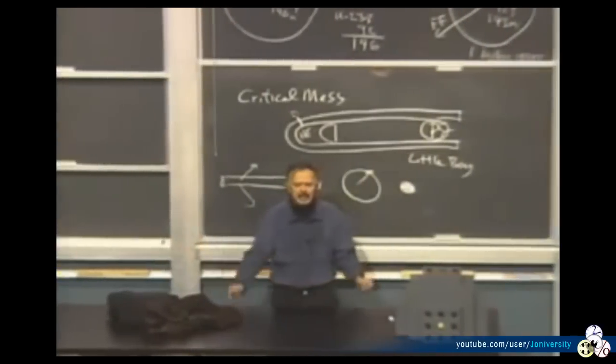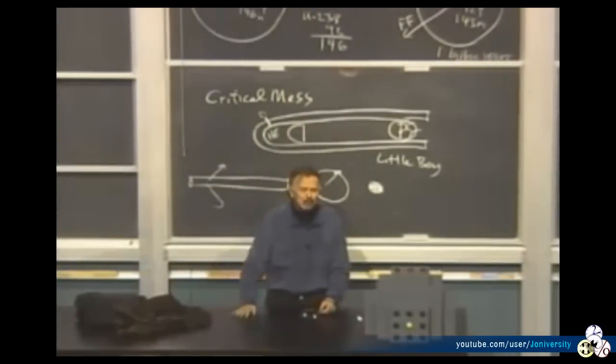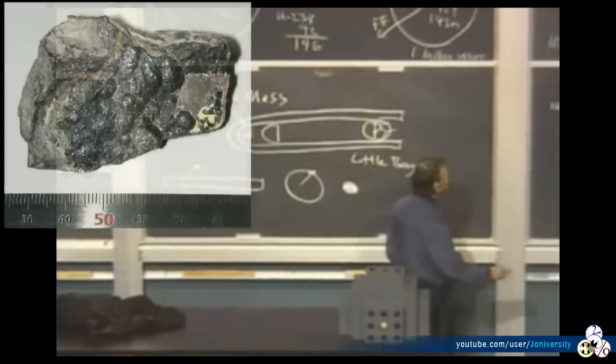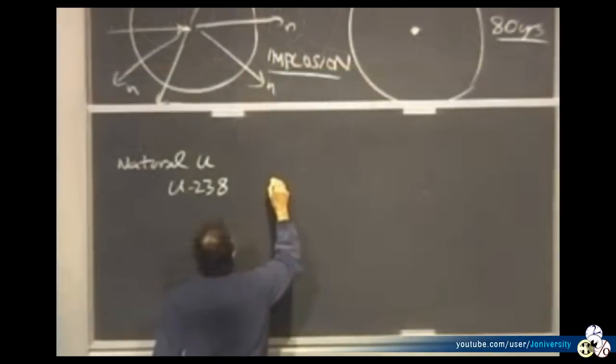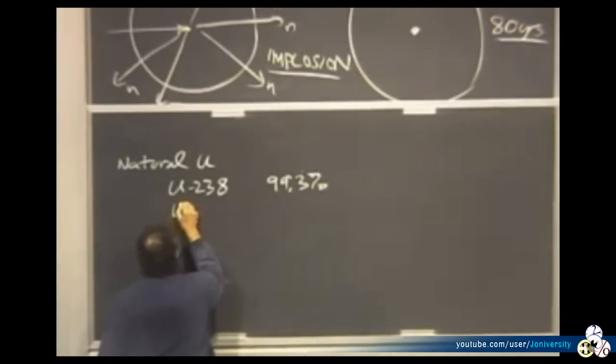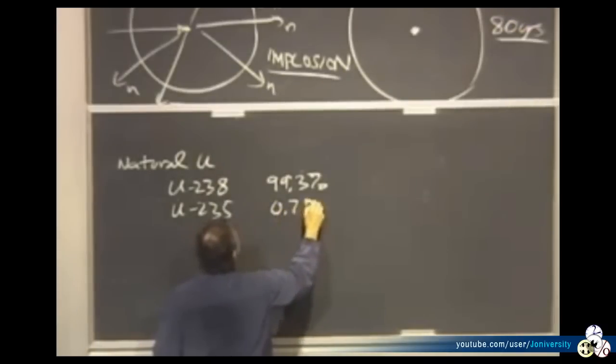So how do you get this uranium? As I said, it's not hard to get the uranium. You can do it from granite. Nobody bothers. You go to uranium ores. But then what you get is natural uranium, which is uranium-238. Uranium-238 is 99.3%. And then the uranium-235, which is mixed in with it, is 0.7%.